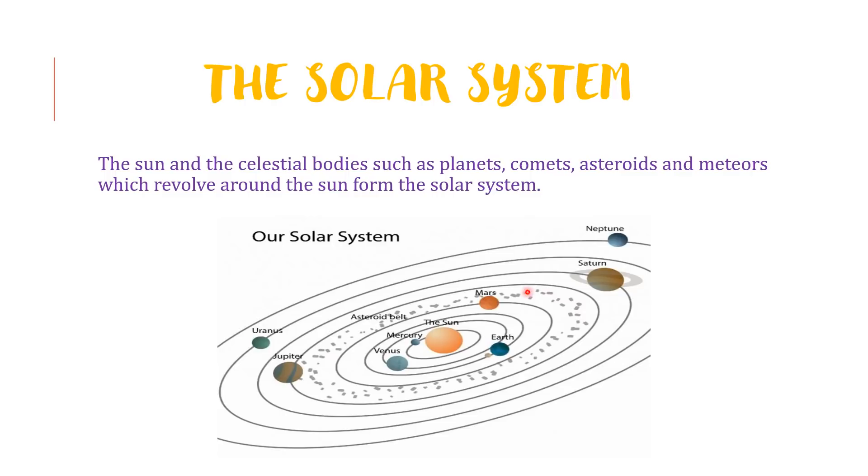All the planets, asteroids are revolving around the sun. This is the picture of the solar system.